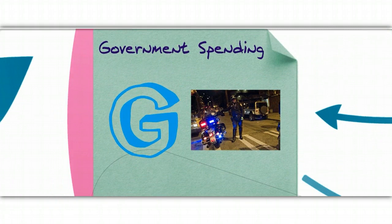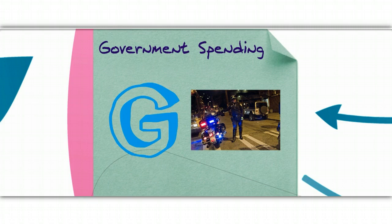G stands for government spending. The government buys things just like we do. What kind of things does the government buy? It may buy police uniforms or motorcycles, guns, food, or building materials for schools and roads. There are plenty of things that the government spends money on, so we're going to count all of this government spending to include all of those goods and services.